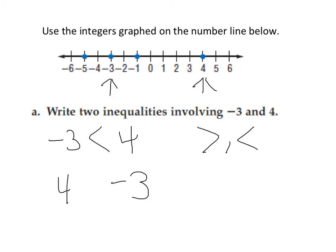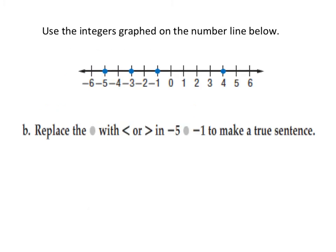The second part asks us to do another comparison. The best way to do that is to switch the order of the numbers. Now we have 4 and negative 3. We know that 4 is positive, and positive numbers are always greater than negative numbers. For problem B, we compare negative 5 and negative 1. Negative numbers being opposite to positive, we must think differently — we need to find which number is closest to 0. Looking at the number line, negative 1 is much closer to 0 than negative 5, so negative 5 is less than negative 1.